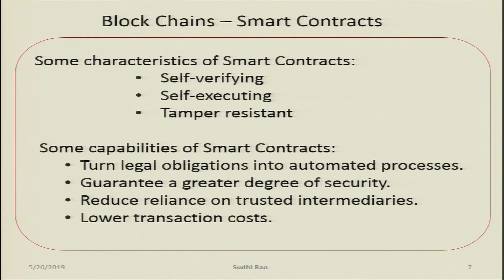Let us look at some capabilities of smart contracts. They can turn legal obligations into automated processes. Once 20,000 dollars is transferred from Alice's account to Bob's account, it is a legal obligation for Bob to surrender the key to Alice — and that happens automatically. Once money is transferred into Bob's account, even Bob cannot intervene and say do not send the lock key; it fires automatically. That is one of the key advantages and strengths of smart contracts.